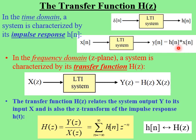The problem is that the convolution sum is often very tedious and complicated to compute, so it's much more efficient to work in the frequency domain where we don't have to do these convolutions. So in the frequency domain, or specifically in this chapter, the z-plane, a system is completely characterized by its so-called transfer function, H of z.